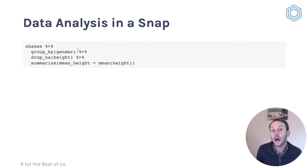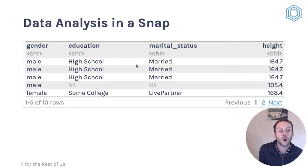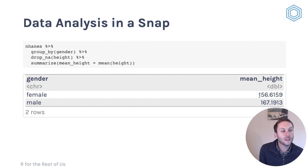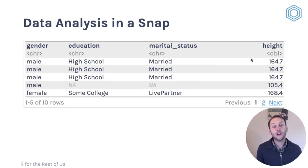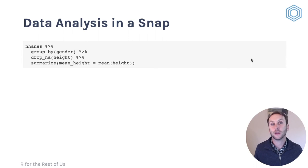In this case the gender variable is only dichotomous. Then let's drop NAs for the height variable, and then let's summarize to get the mean height. When I do that, I go from raw data to a summary. I can see the average height for females in the US — this is a nationally representative dataset — is about 157 centimeters, and for males about 10 centimeters greater than that. And of course I only had 10 observations here, but you can do this with 10,000 observations and it gives you the same summary, which is great.